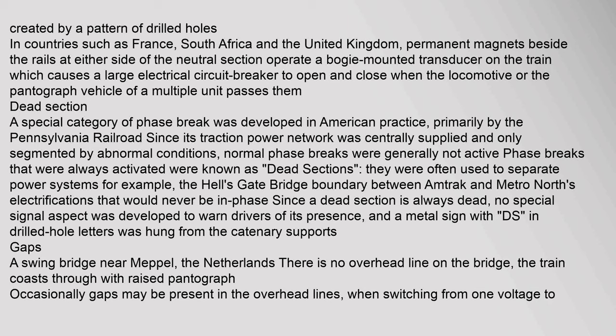A special category of phase brake was developed in American practice, primarily by the Pennsylvania Railroad, since its traction power network was centrally supplied and only segmented by abnormal conditions. Phase brakes that were always activated were known as dead sections; they were often used to separate power systems. For example, the Hell's Gate Bridge boundary between Amtrak and Metro North's electrifications would never be in phase. Since a dead section is always dead, no special signal aspect was developed, and a metal sign with drilled-hole letters was hung from the catenary supports.